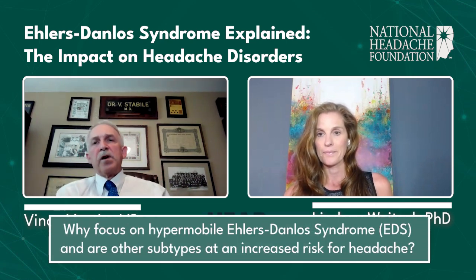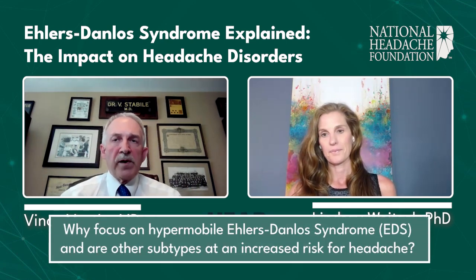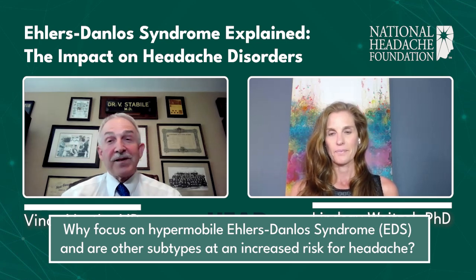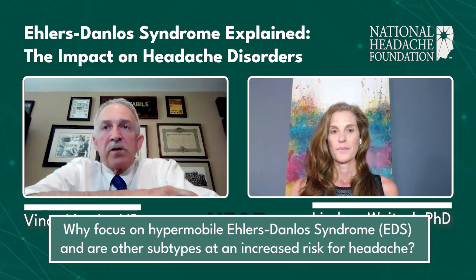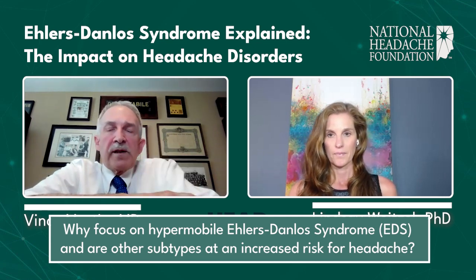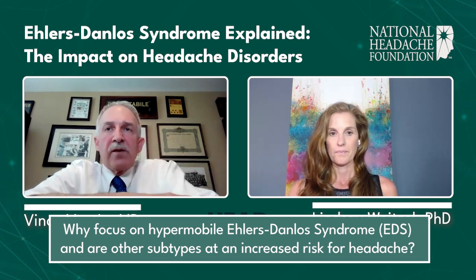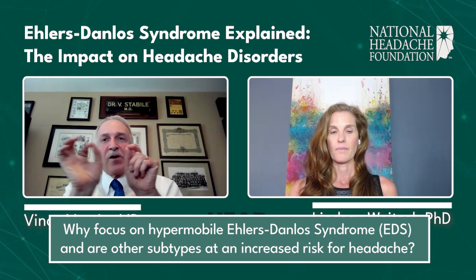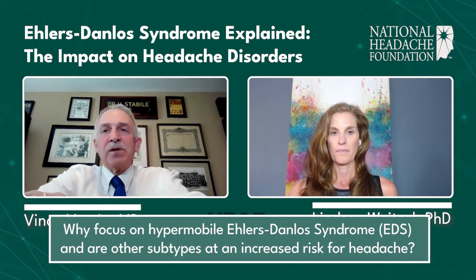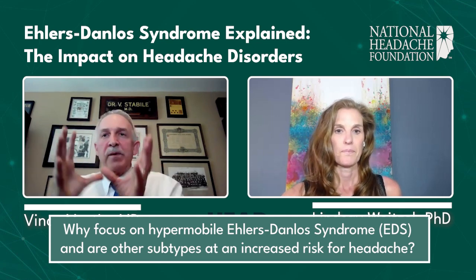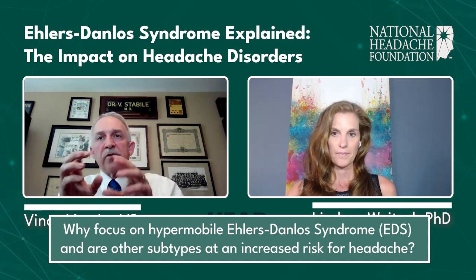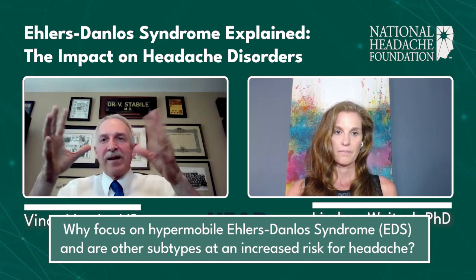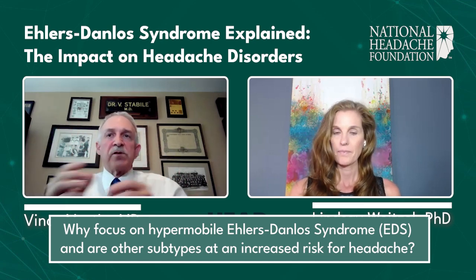We're focusing on the hypermobile EDS because it's the most common form of EDS in the population. Unfortunately, it doesn't have any genetic markers, so there's no genetic test we can do to diagnose it, as opposed to some of the other forms of EDS that actually do have specific genes linked to them. When you look at all the diseases of connective tissue disease, usually it's a problem with collagen, which is the filler between cells and provides the elasticity of tissues, or the material called extracellular matrix, which surrounds the collagen. These are diseases of the connective tissue—the matrix of tissue that surrounds cells in the body.